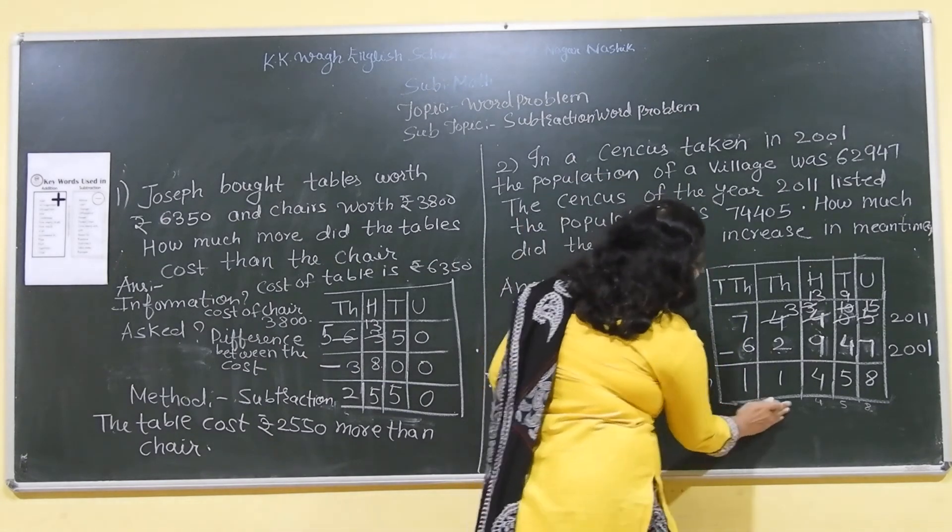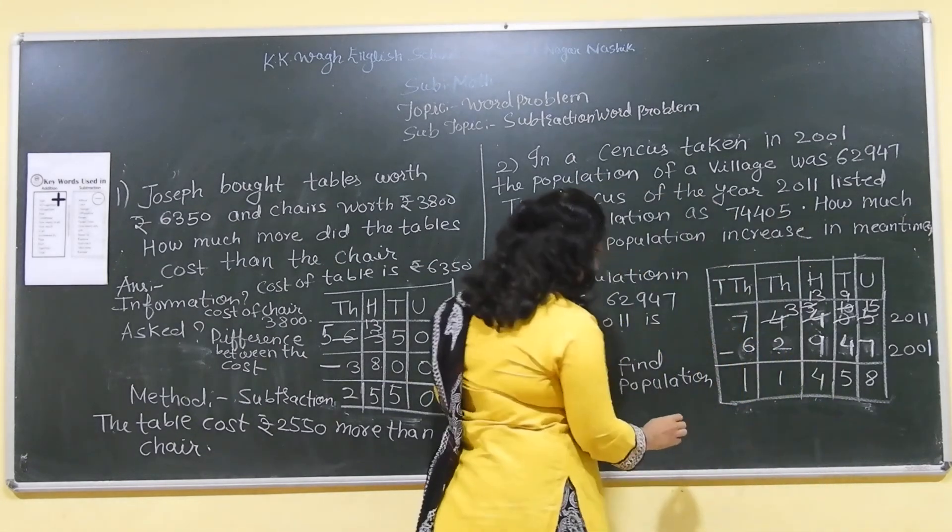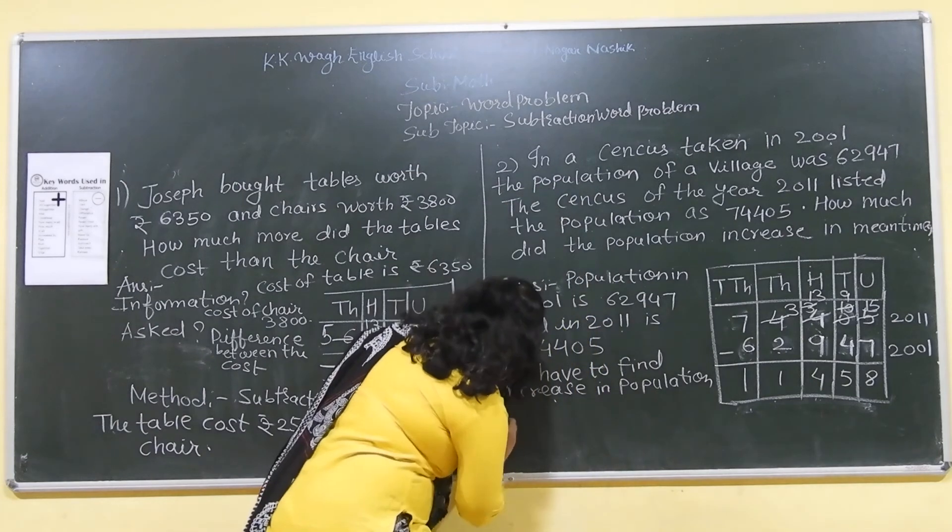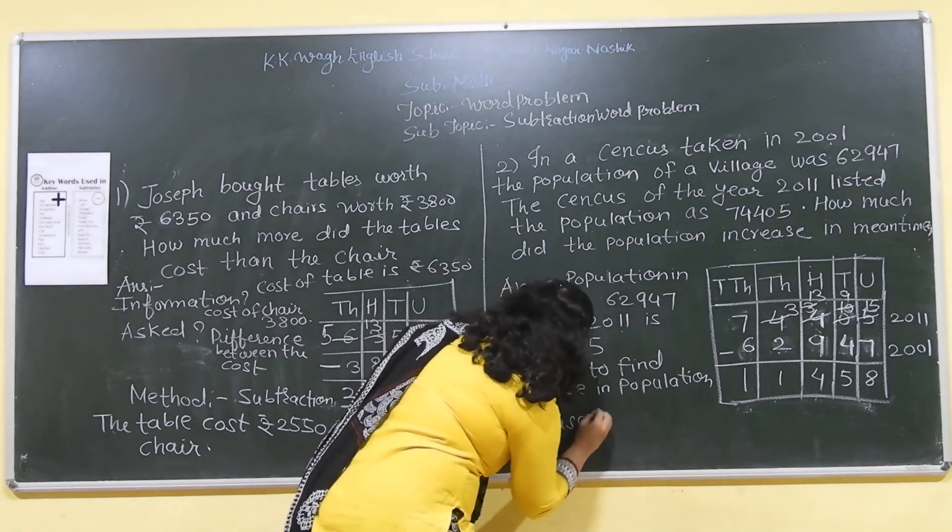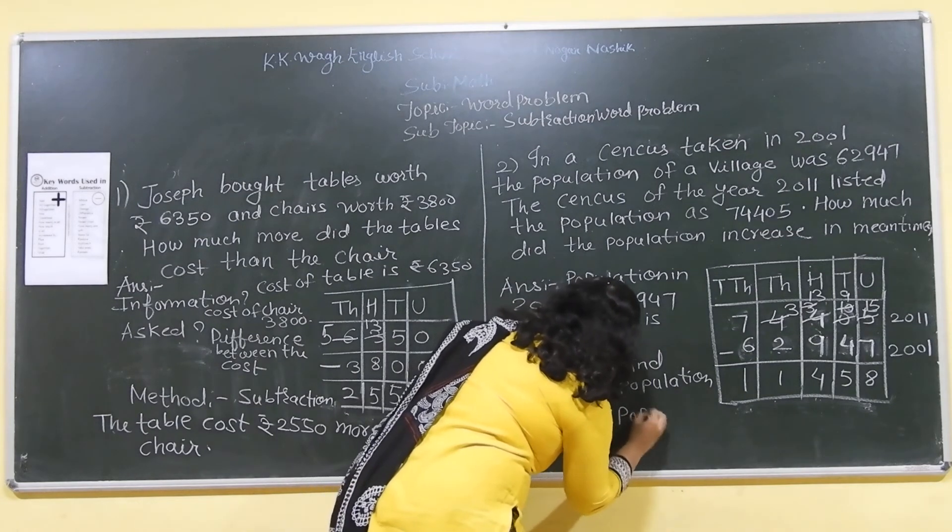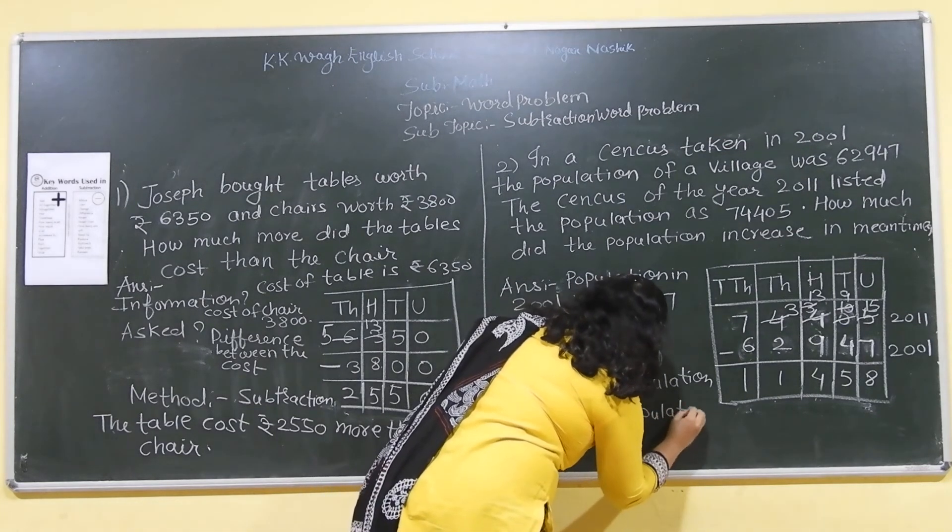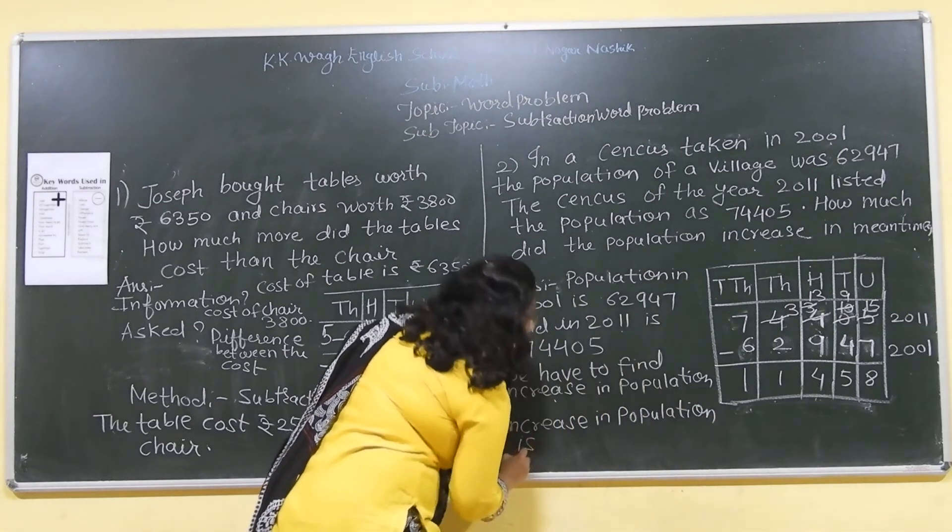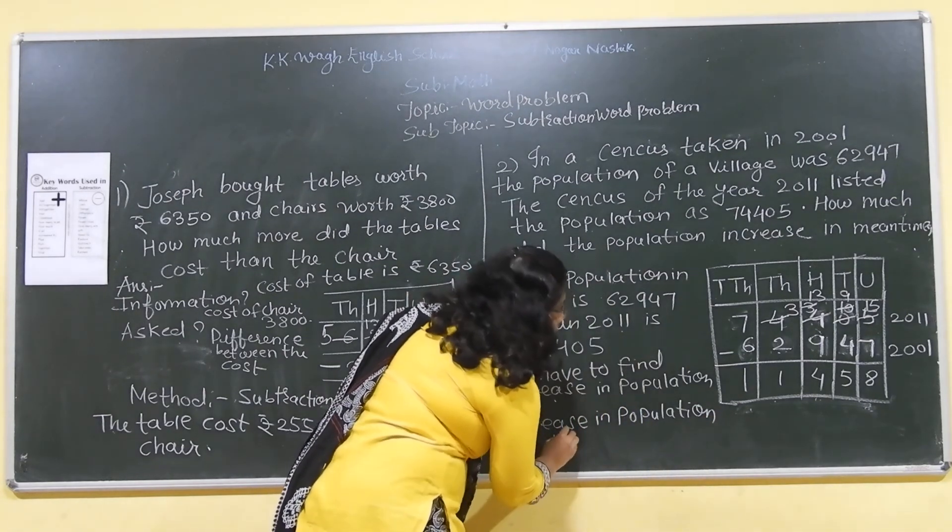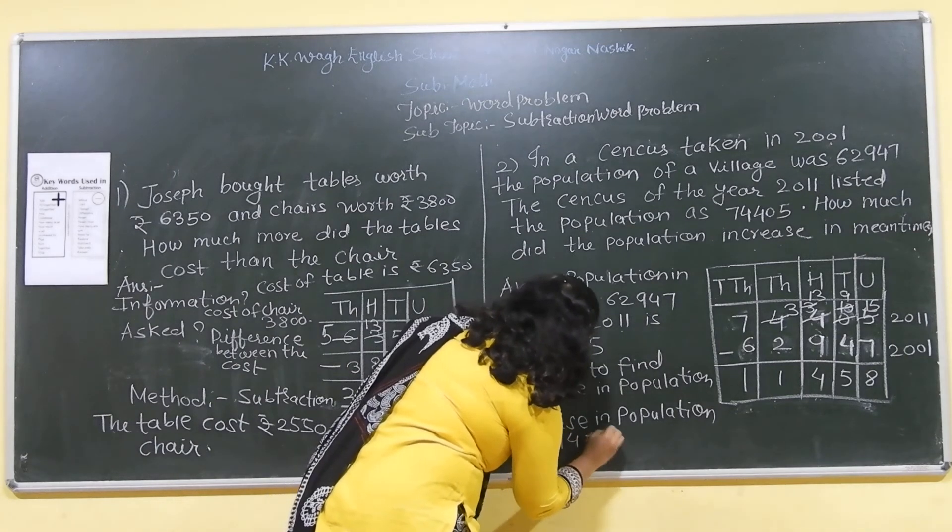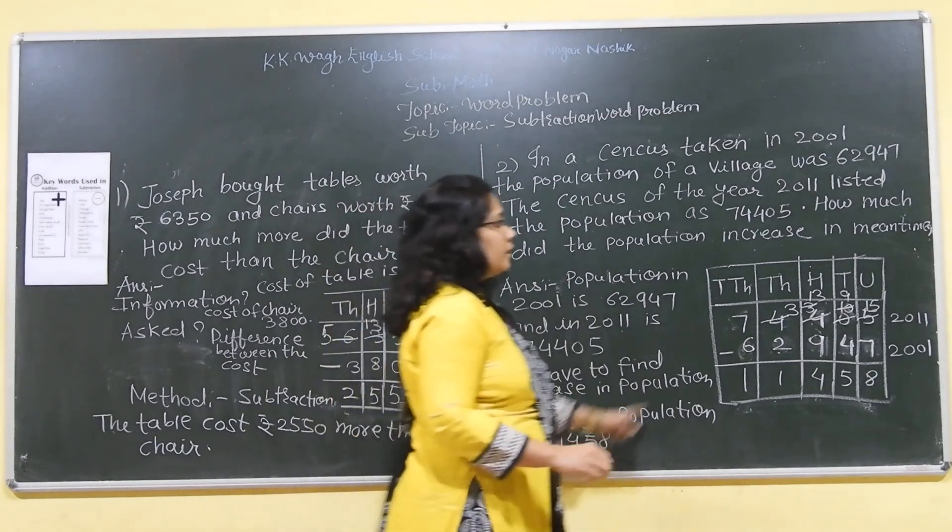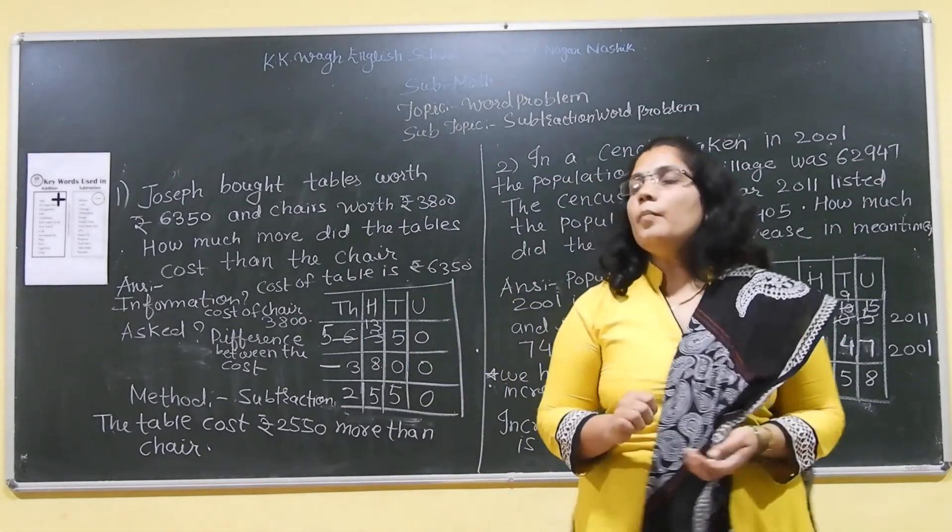So, we have got the answer. The answer is, increase in population is 11458.